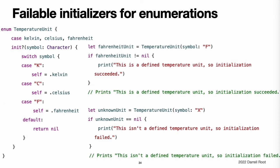Failable initializers for enumerations. You can use a failable initializer to select an appropriate enumeration case based on one or more parameters. The initializer can then fail if the provided parameters do not match an appropriate enumeration case. This example defines an enumeration called TemperatureUnit with three possible states: Kelvin, Celsius, and Fahrenheit. A failable initializer is used to find an appropriate enumeration case for a Character value representing a temperature symbol. You can use this failable initializer to choose an appropriate enumeration case for the three possible states and to cause initialization to fail if the parameter does not match one of those states.